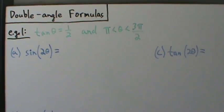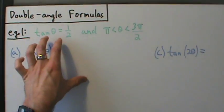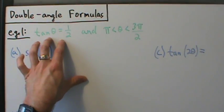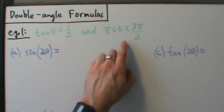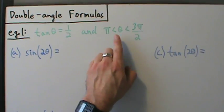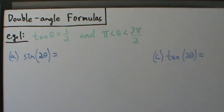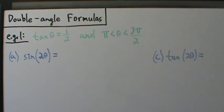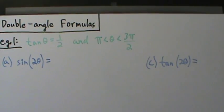This is going to be a reference triangle problem. We've done a few things like this before where we're given a trig function of some angle and we're told generally where the angle is. So first we have to figure out what quadrant that is. If theta is between pi and 3pi over 2, that's going to be in quadrant 3.